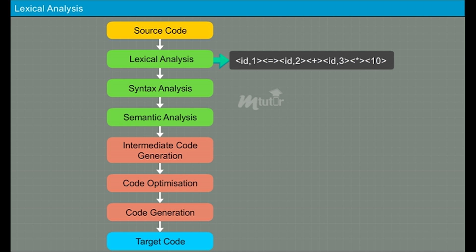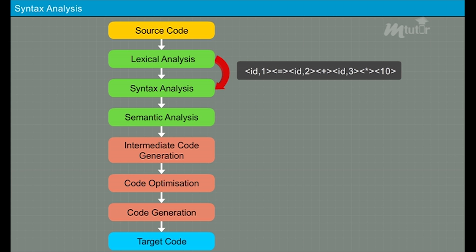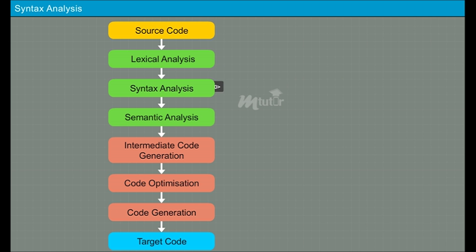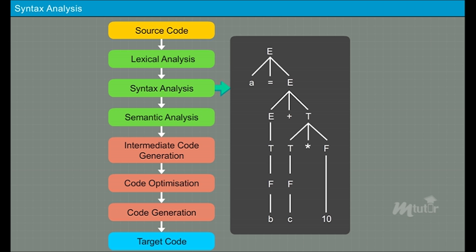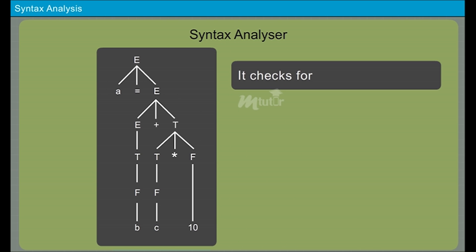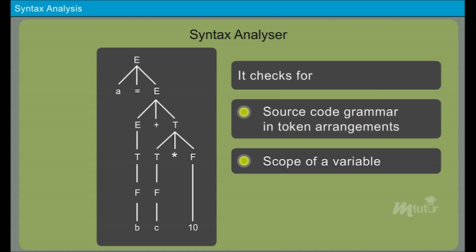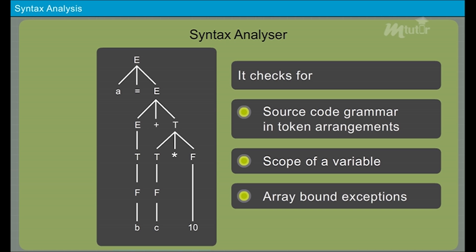Lexemes are a series of atomic units that cannot be split further. The next phase is the syntax analyzer, also called parsing. It takes the tokens — the output from lexical analysis — as input, and generates a parse tree or syntax tree. A parse tree is a hierarchical structure which represents the syntactic structure of a string. It also checks the source code grammar in token arrangements, scope of a variable, and array-bound exceptions, which will be discussed elaborately in further lessons.